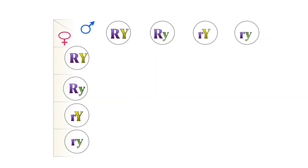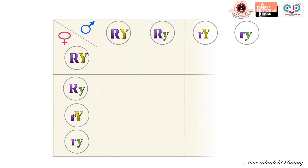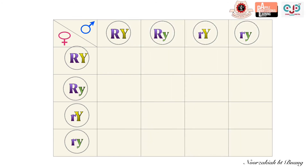Since there are four types of gametes for both male and female, a Punnett Square is used to combine them. To make the square, the four equally probable gametes are placed along each axis. Then the gametes on the axis are combined, representing the fertilization process.